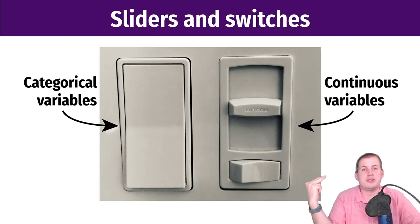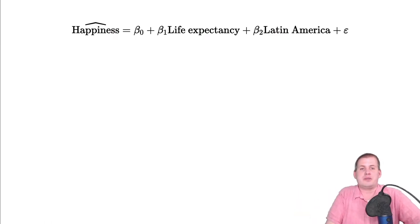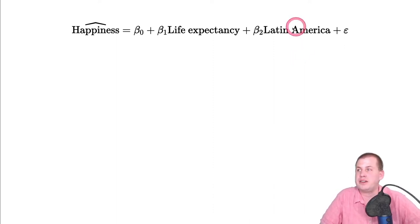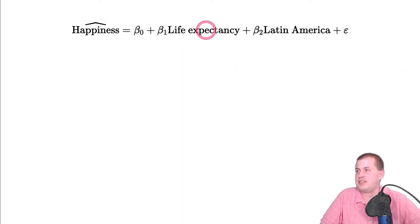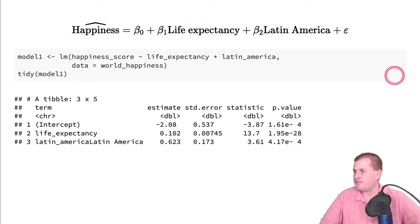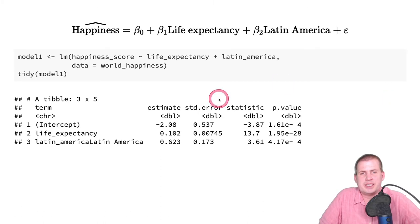Let's say you have a regression model trying to predict happiness in a country based on its life expectancy and an indicator variable for whether the country is in Latin America or not — a binary variable. This uses actual real data from the World Bank, which provides a happiness index, life expectancy, and regional classifications for different countries.